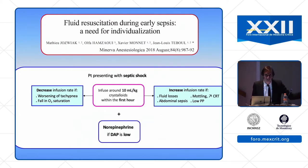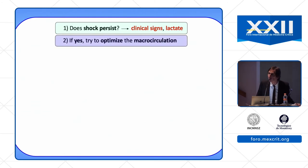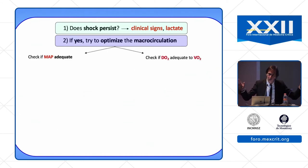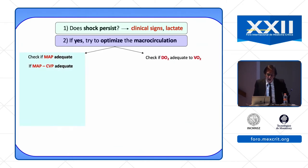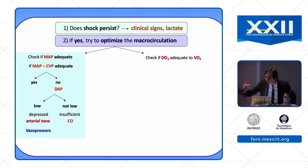Don't forget to give norepinephrine if you have a low diastolic arterial pressure, independently of fluid optimization. After the initial resuscitation, ask: does shock persist? Rely on clinical signs, lactate, etc. If yes, try to optimize the macro-circulation first. Check if MAP is adequate — meaning check if MAP minus CVP is adequate. If MAP is not adequate, look at the diastolic arterial pressure: if low, consider vasopressors; if not low, it is probably due to insufficient cardiac output.